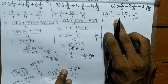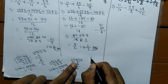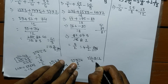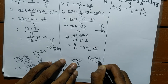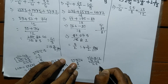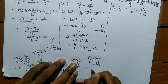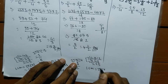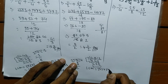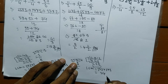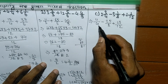Now we take the LCM of denominators 4, 8, and 12. So 2 times 2 means 4, 2 times 4 means 8, 2 times 6 means 12; again 2 times 1 means 2, 2 times 2 means 4, 2 times 3 means 6. So the LCM is 2 times 2 times 2 times 3, which gives us 4 times 2 means 8, and 8 times 3 means 24. The LCM of 4, 8, and 12 is 24.